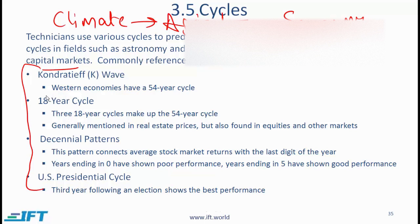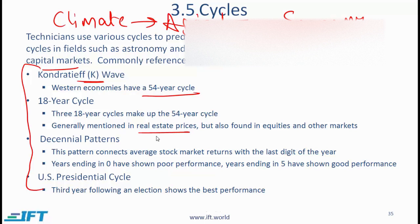There is a little more detail in the curriculum, but the material on this slide should be sufficient for the exam. You have something called the Kondratiev or K-wave, which essentially says that Western economies have a 54-year cycle. Then there is an 18-year cycle — three 18-year cycles make up the 54-year cycle. Generally, this is used in real estate prices but is also found in equities and other markets.